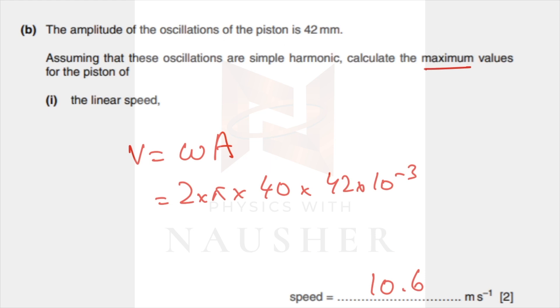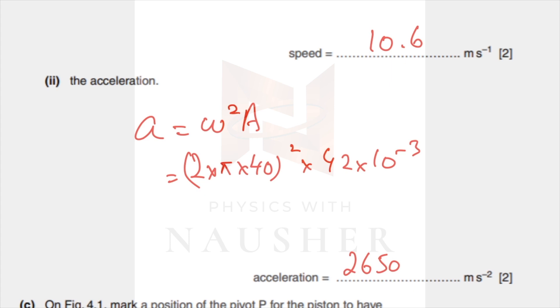Amplitude is given. Find maximum speed: the formula is omega A. Omega is 2πf, frequency is 40, amplitude is 42 millimeters converted to meters, and you get 10.6 meters per second. Then the acceleration is omega squared A: omega is 2πf whole squared into the amplitude, and your answer should be 2650 after rounding off.